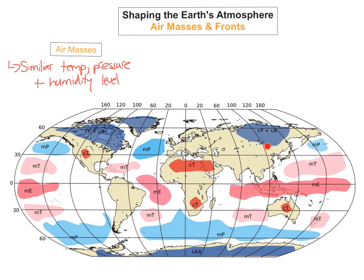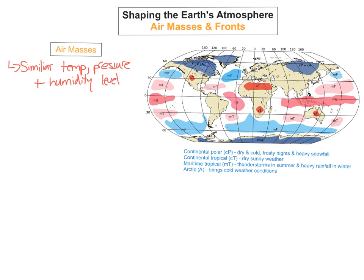So you might be wondering what these actually stand for. CP would be continental polar. CT would be continental tropical. MT would be maritime tropical. CA would be continental arctic. And MP means maritime polar. I've put in the differences — what each letter stands for and the type of weather it brings, so please jot them down in your notes.